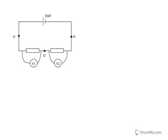So Kirchhoff's laws tell us: in a series circuit, in terms of current, because it's a series circuit, those currents I1, I2, and I3 must all be the same. There's nowhere for the electrons to go — they've just got one pathway. Series current is the same throughout.